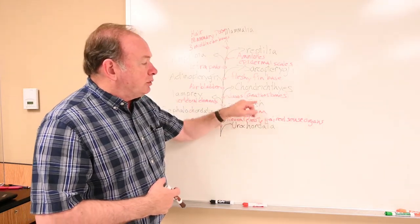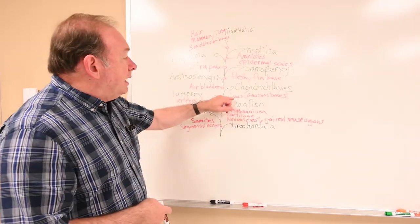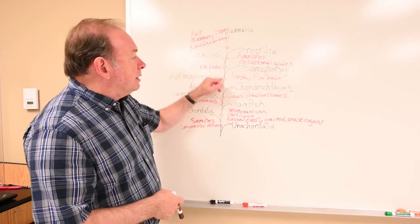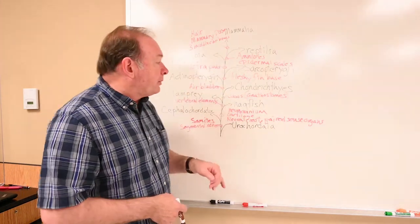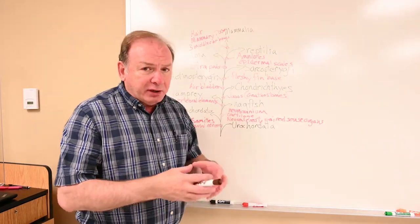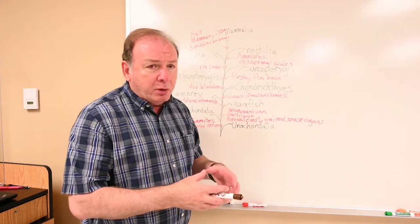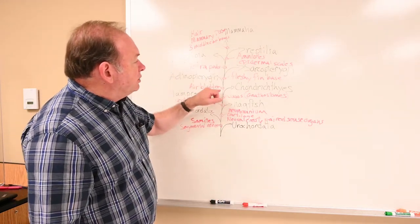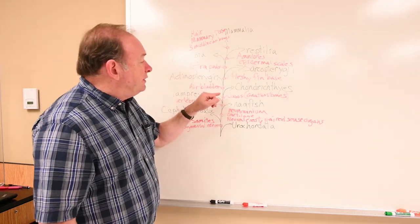These are known as gnathostomes — 'gnatho' refers to jaw or mouth. Then we add to the fish the air bladder. These next two groups are going to be called bony fish, because they have some bone in their inner skeleton instead of a mainly cartilaginous endoskeleton.